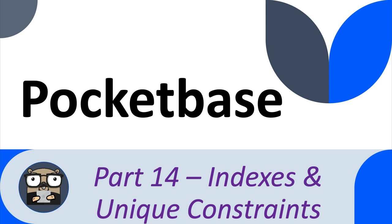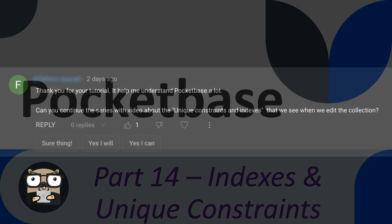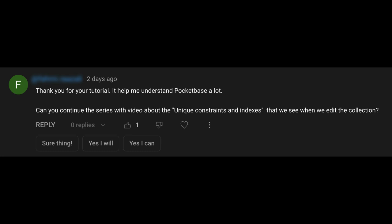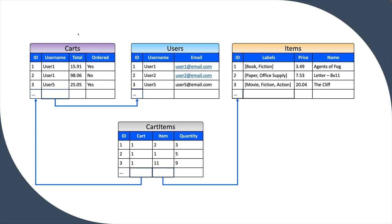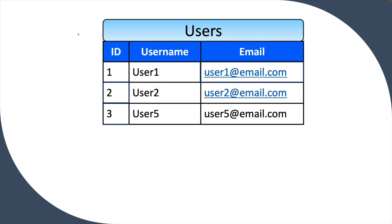Hello, good day and welcome back to Go on the Run. Today we're going to look at indices and unique constraints in PocketBase. I got this request from a user so I just want to cover it quickly. Let's think about the relationship between the collections or tables that we have. I'm going to start by talking about uniqueness first and then I'll talk about indices.